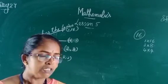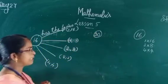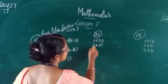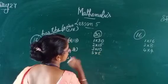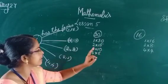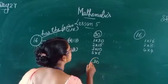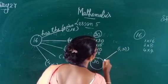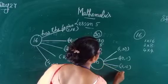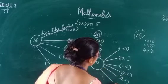Next, the multiplication story of 30. After factoring, we can write: 1 into 30, then 2 into 15, then 3 into 10, then 5 into 6. So the multiplication story of 30 is: 1 into 30, 30 into 1, 2 into 15, 15 into 2, 3 into 10, 10 into 3, 5 into 6, and 6 into 5.